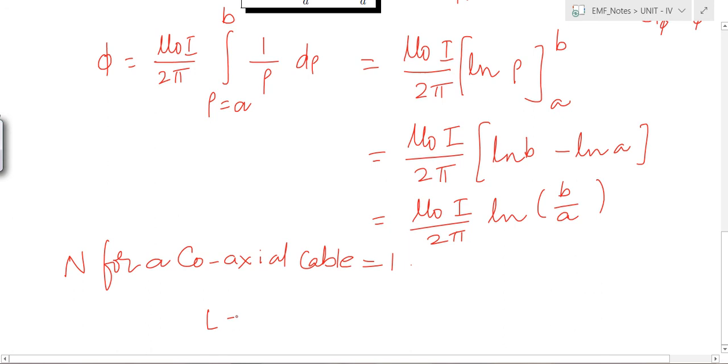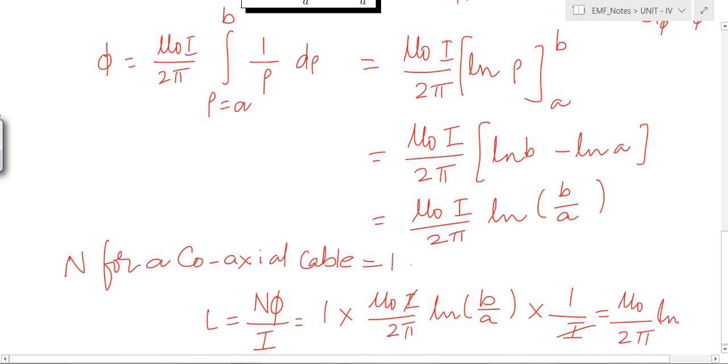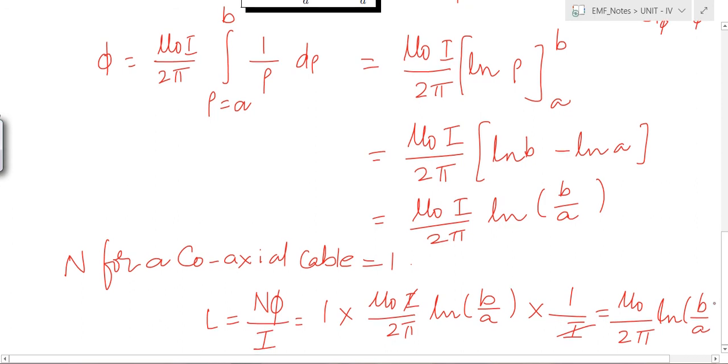Now coming to the definition of inductance, L is the ratio of the flux linkages to the current which they link. The flux linkages are n into phi. The flux linkages are linking with the current I. This value is equal to, by substituting the values of n, phi and I, you know that n is equal to 1 into phi, so phi mu 0 I by 2 pi ln b by a into 1 by I. I will get cancelled. What remains left is mu 0 by 2 pi into ln b by a is the flux linkages.